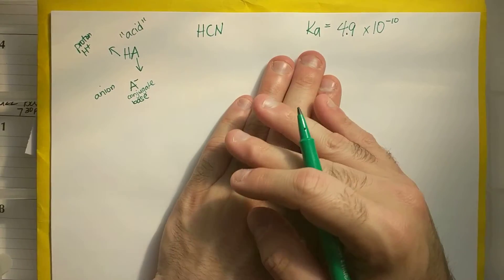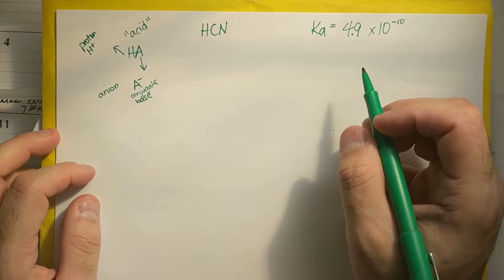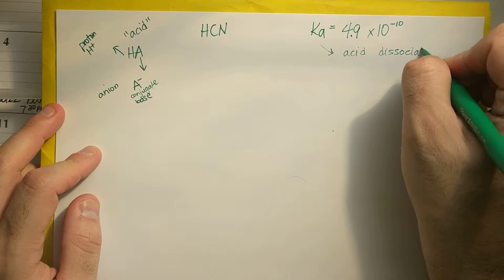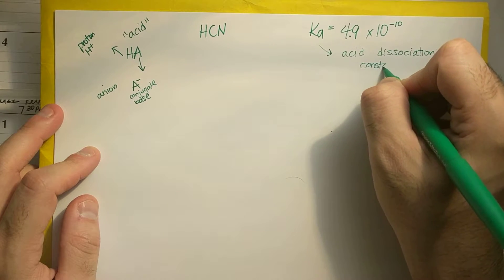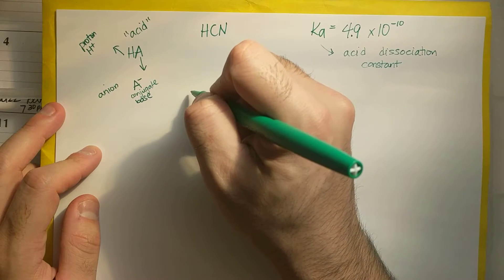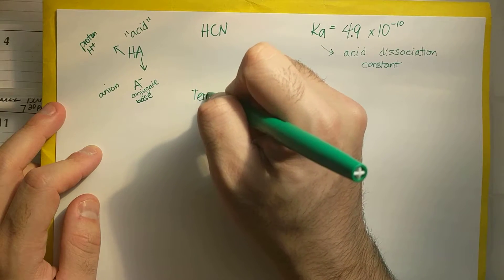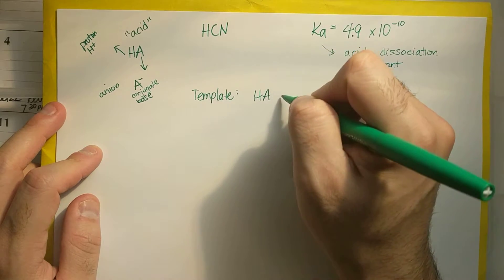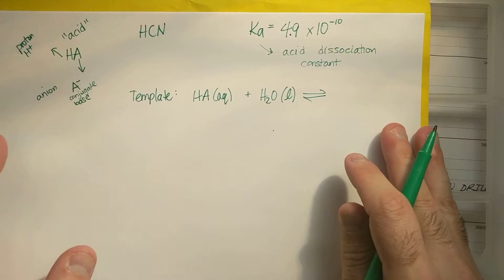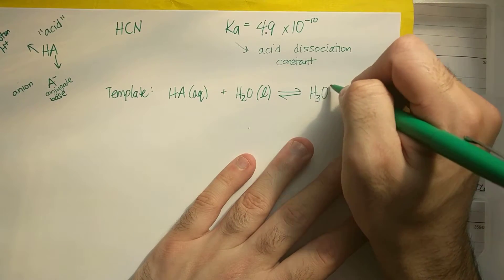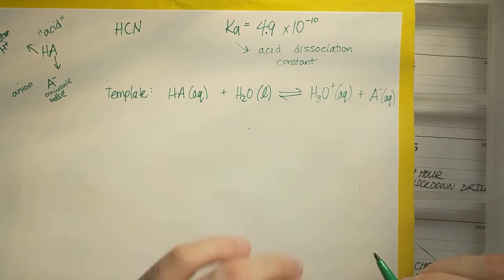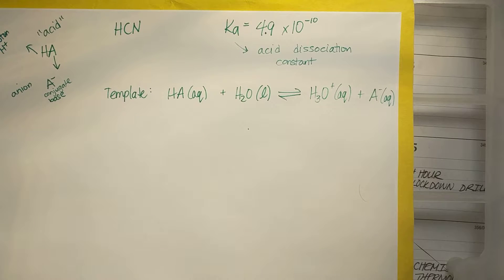So if I have HCN, and I'm giving you that the KA for HCN is 4.9 times 10 to the minus 10th, the KA is the acid dissociation constant. So dissociation of an acid, kind of like the dissociation of ions, involves the following. Here is the template. So my template is HA aqueous plus H2O liquid in equilibrium with H3O plus aqueous plus A minus aqueous.